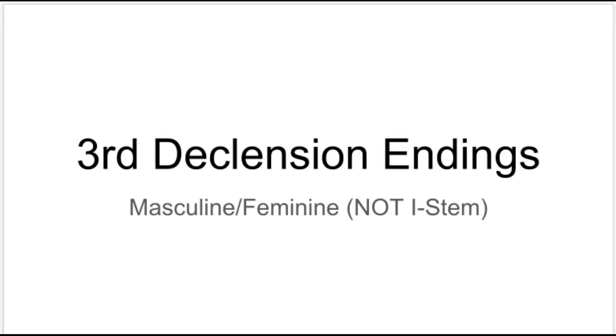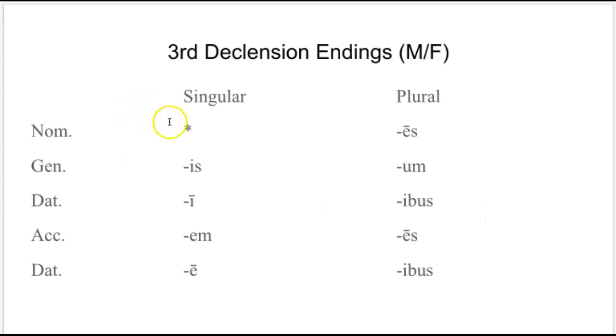And so if we look at our endings, you'll notice here that for the singular nominative singular there's a little asterisk here, and the reason for that is the first form can be just about anything. So it's anything, is, e, m, a, ace, um, ibus, ace, ibus.